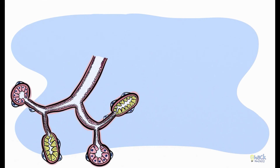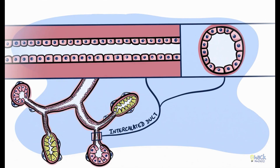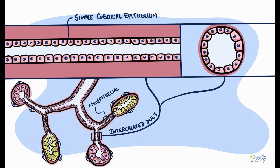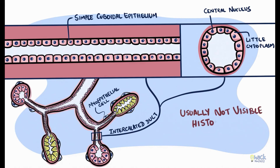Secretory end pieces are continuous with intercalated ducts. Intercalated ducts are lined by simple cuboidal epithelium and are associated with myoepithelial cells. The intercalated duct cells have a central nucleus and little cytoplasm. Intercalated ducts are very small and are usually not visible under the microscope.